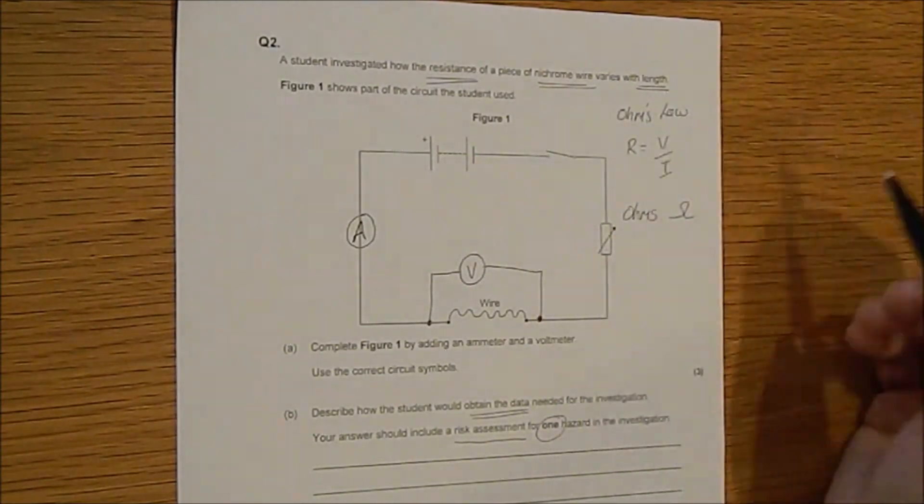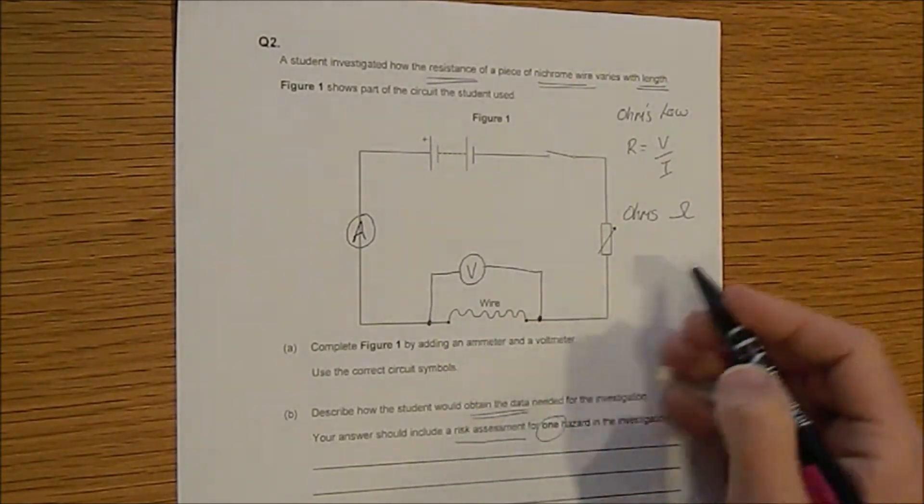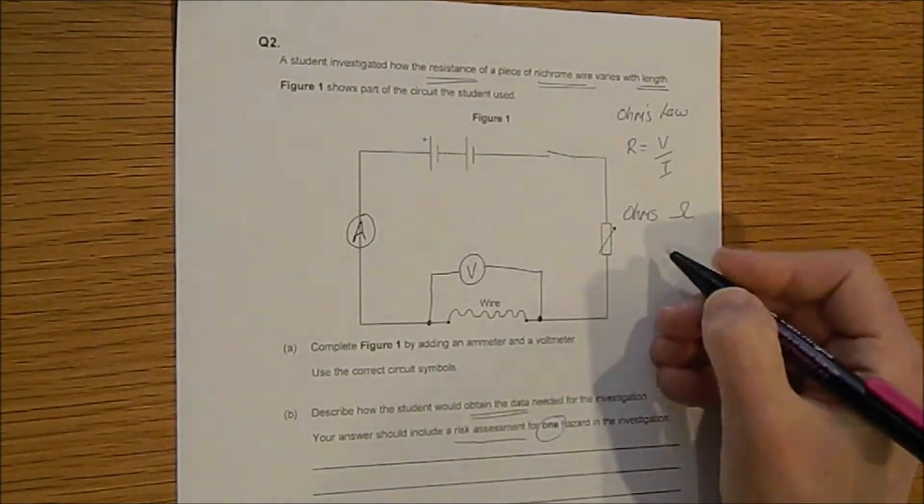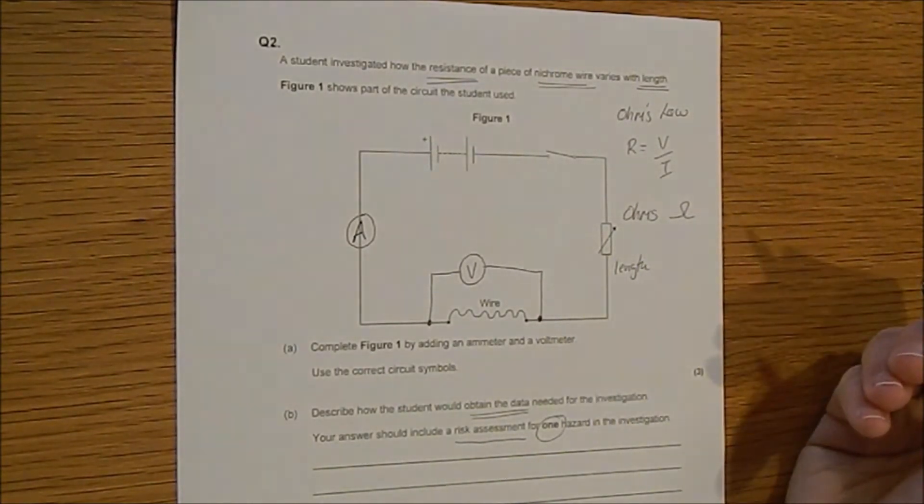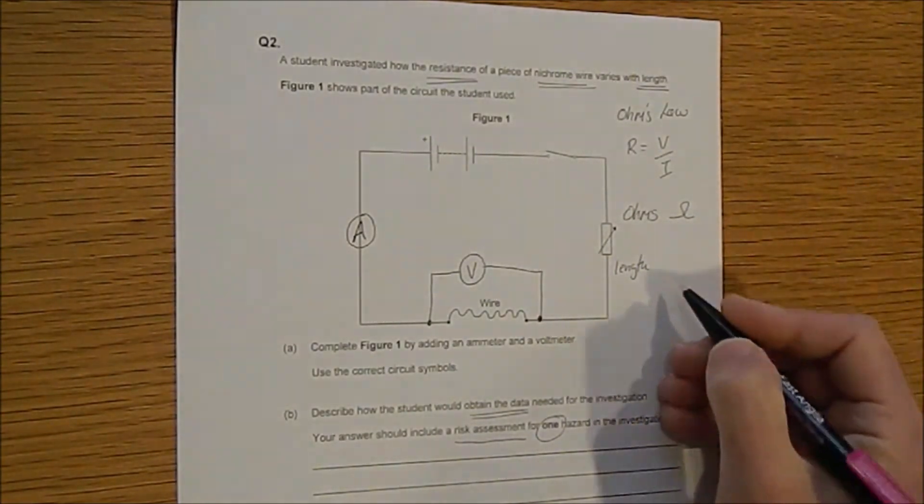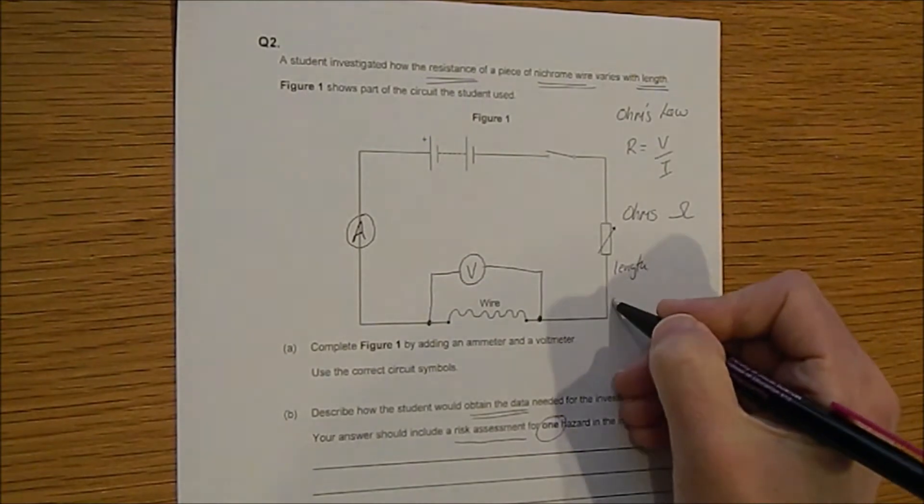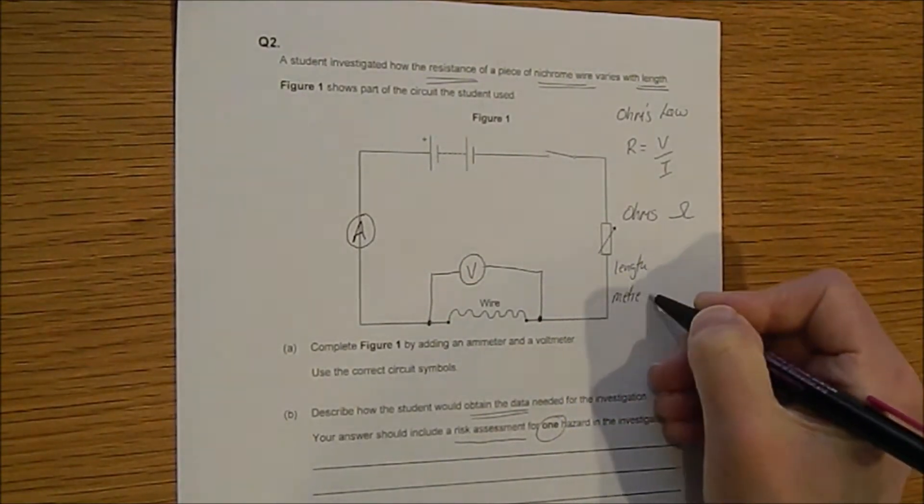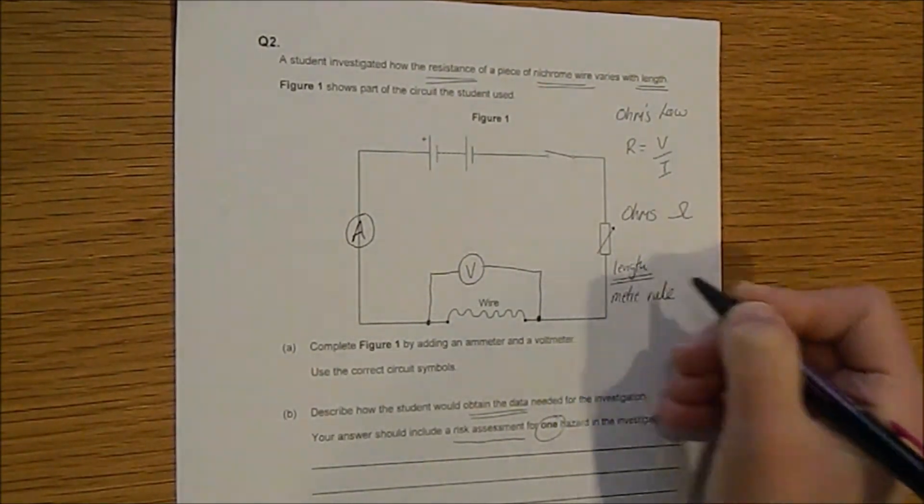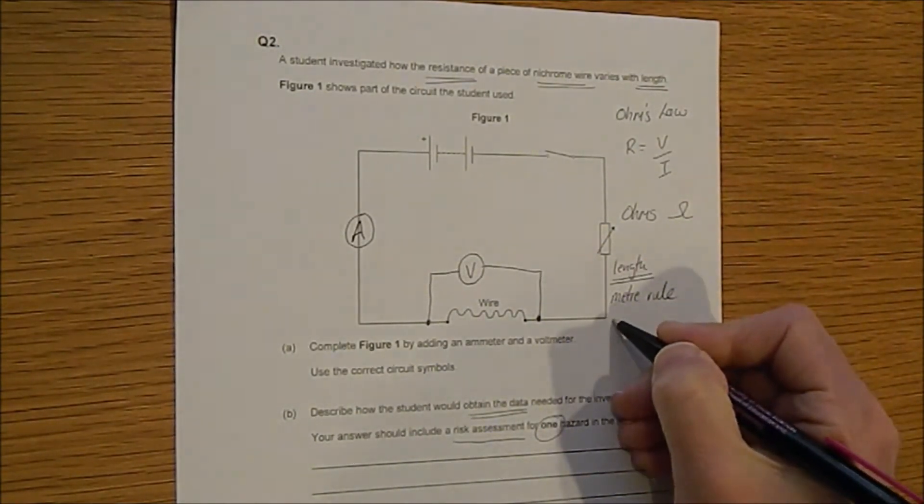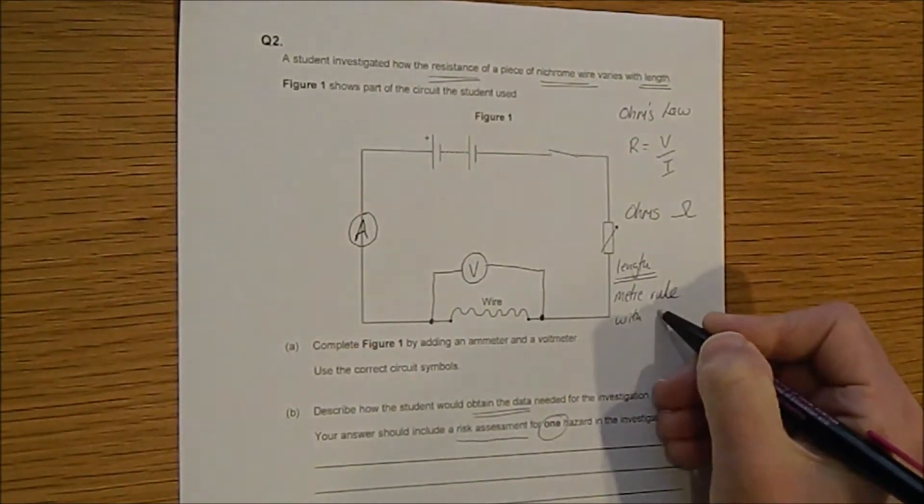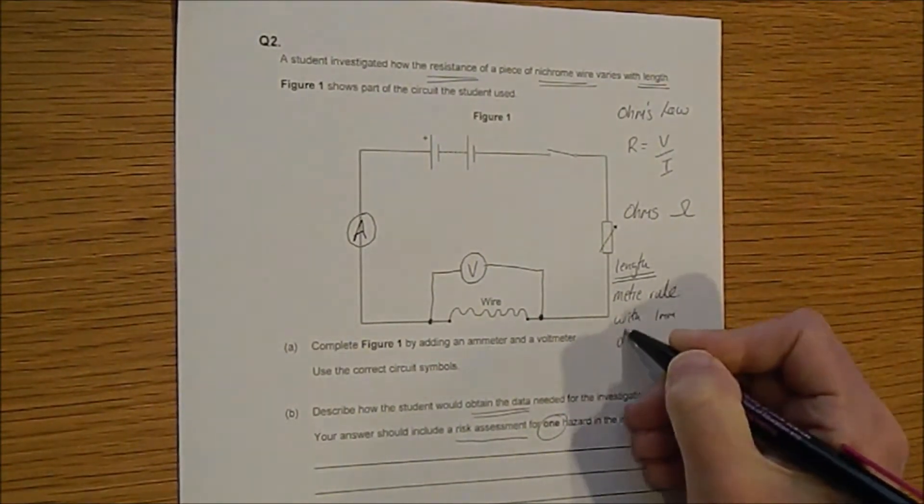What else do we need to do? We need to change the length. If we're going to be measuring the length, we're going to need to use something to measure it with. So let's use a metre rule.